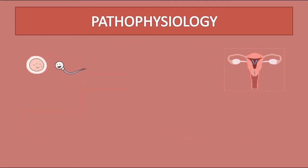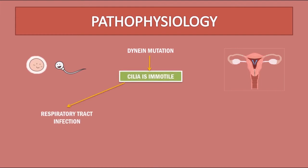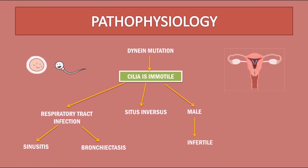Pathophysiology: Due to mutation in the dynein arm, cilia become immotile. In the respiratory tract, they can't clear the mucus and harbor more pathogens, resulting in recurrent sinusitis and bronchiectasis. There is situs inversus, but note transposition of great vessels due to incomplete embryonic rotation. In males, the sperm becomes immotile as the flagella has the same structure as cilia, hence they are rendered infertile. In females, the cilia in the fallopian tube are non-functional, but the ovum is moved by contraction of the fallopian tube, hence in females it does not cause infertility.